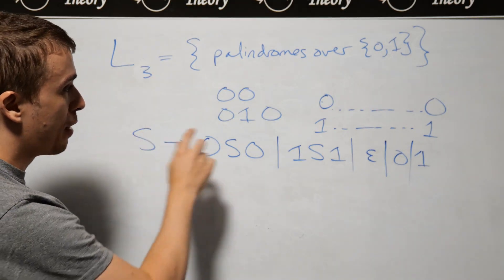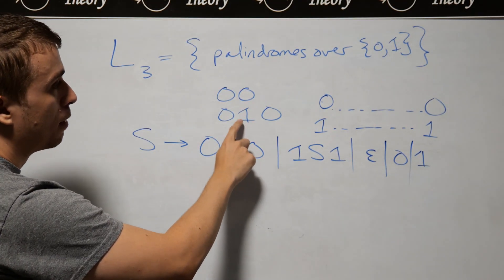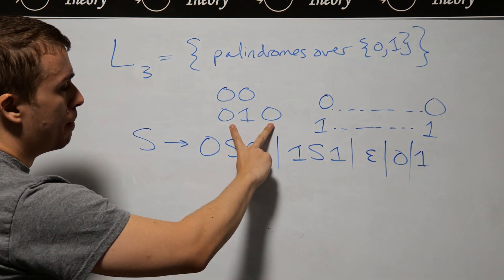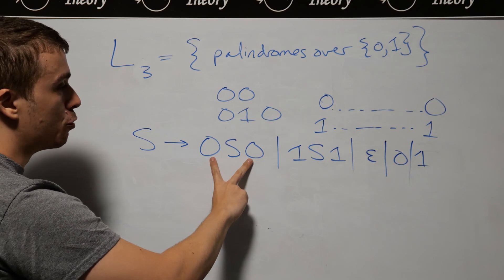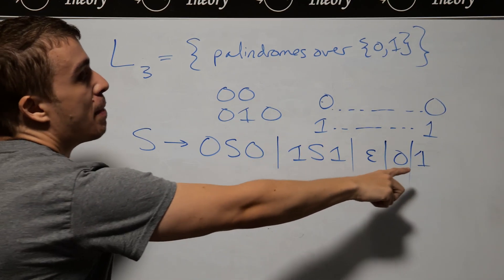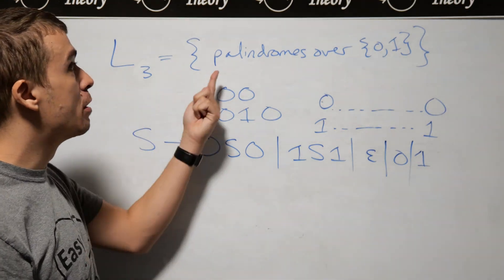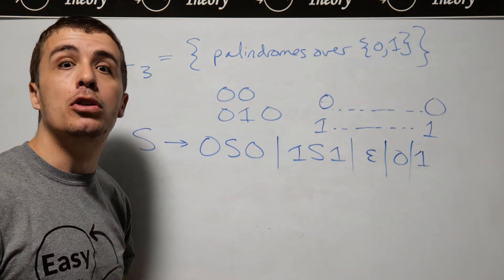Now let's think: can we actually generate this string? We can obviously generate this string, and you should do it for yourself. Can we do this one? We can apply this rule, then this S can make the 1 over there. Therefore, we have made a context-free grammar for all palindromes over {0, 1}.